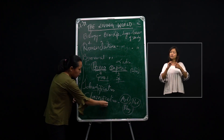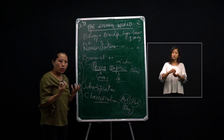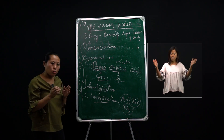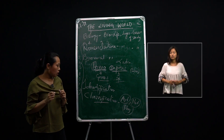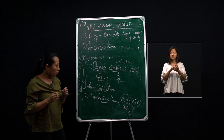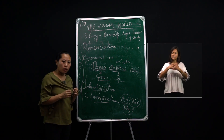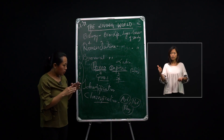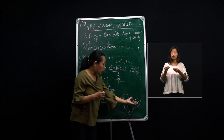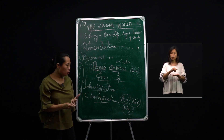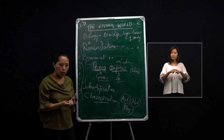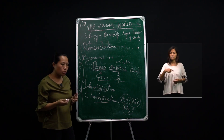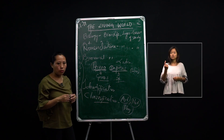Classification can be compared to the arrangement of books in a library, where books are arranged according to author or subject. All organisms in existence today are placed in one category or another following either the artificial, natural, or phylogenetic system of classification. With this, I would like to wind up this class, and in the next class we can go into detail about what aids can be used for classification. Thank you.